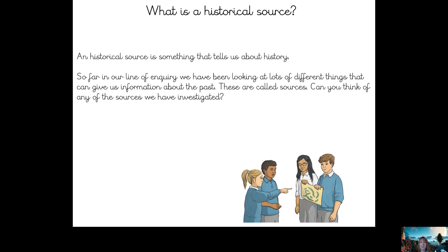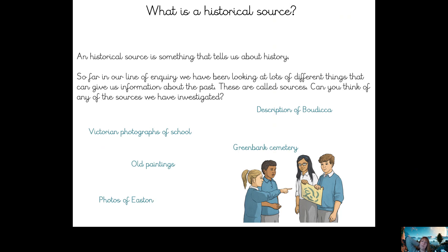These are some of the things we've used so far that are historical sources. We've had Victorian photographs of school, some old historical paintings, photos of what Easton used to look like — the area of Bristol where Bannerman Road School is. We were looking at descriptions of what Boudicca was like, and we were looking at Greenbank Cemetery at the gravestones. They were historical sources telling us information about the past.